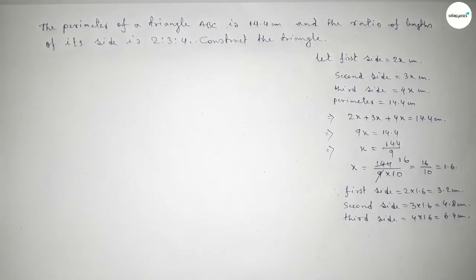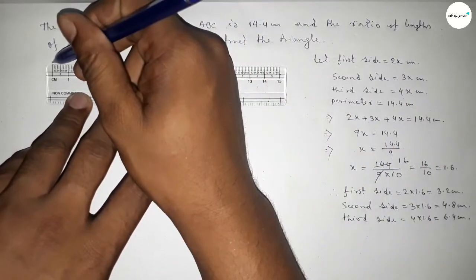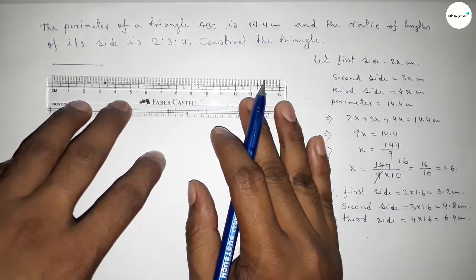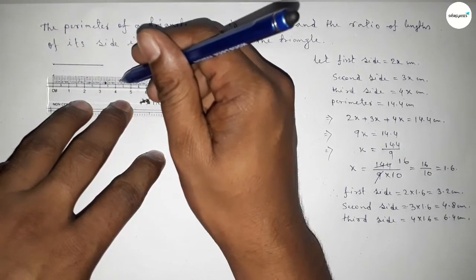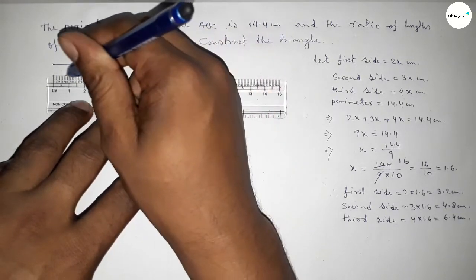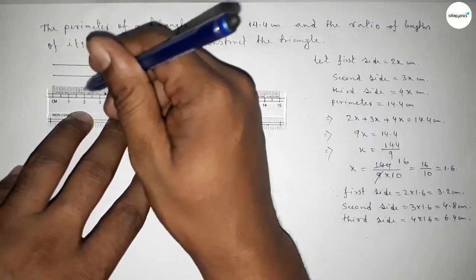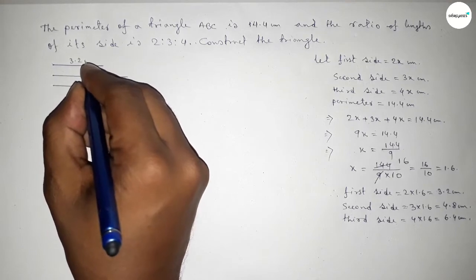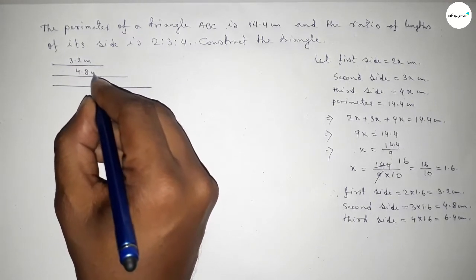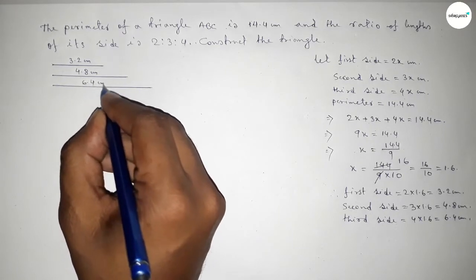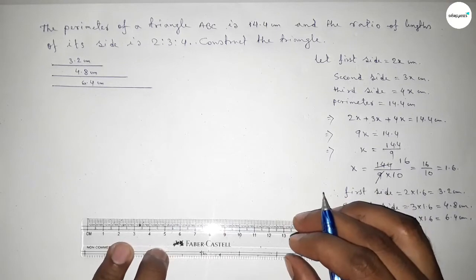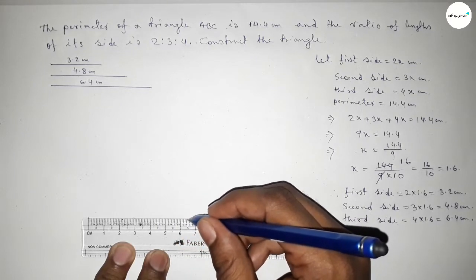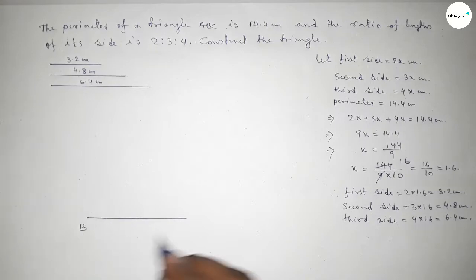First, drawing a line of length 3.2 centimeters, then another line of length 4.8 centimeters, and then the last line of 6.4 centimeters. So we have 3.2 cm, 4.8 cm, and 6.4 cm. First we draw a line of length 6.4 centimeters, marking point B at one end and point C at the other.